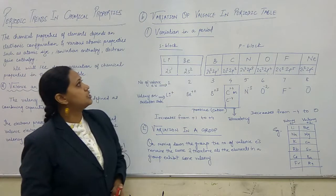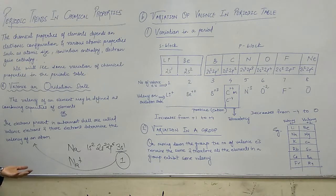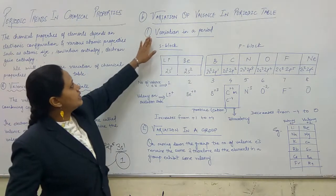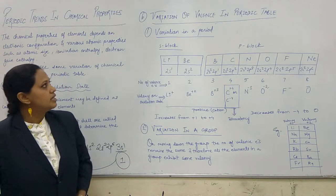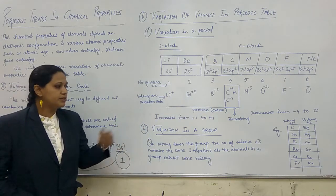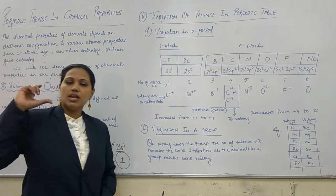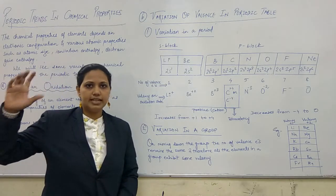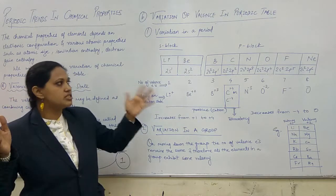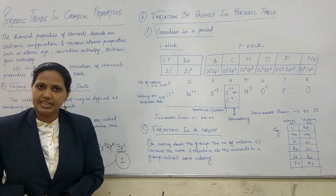Now we will talk about variation of valence in the periodic table. Point number 1 is variation in a period and point number 2 is variation in a group. Period means horizontal. We will talk about the S and P block to make your concept clear about variation in the period.